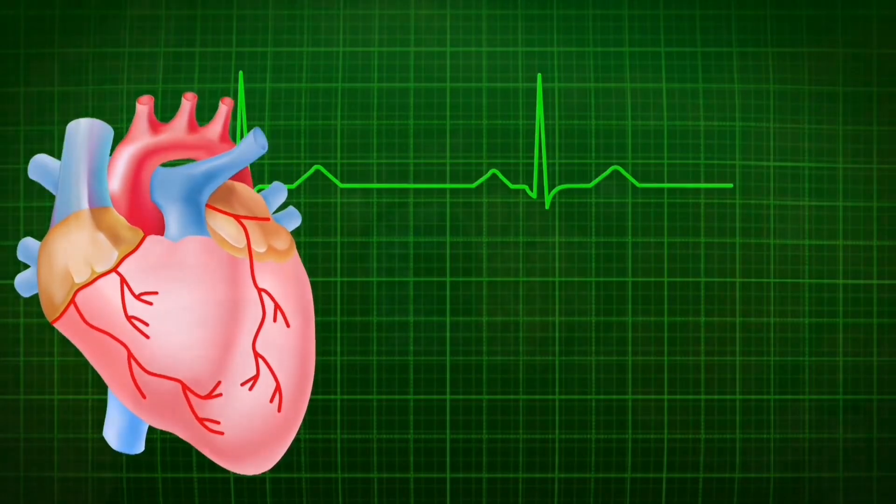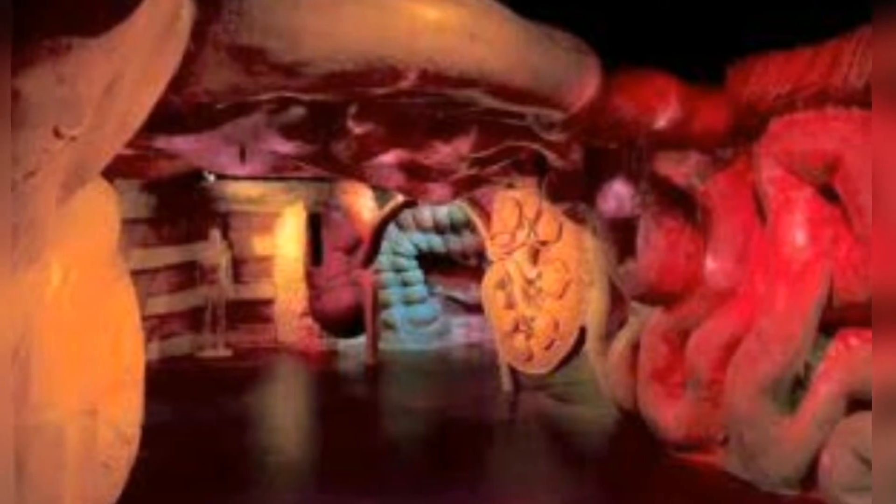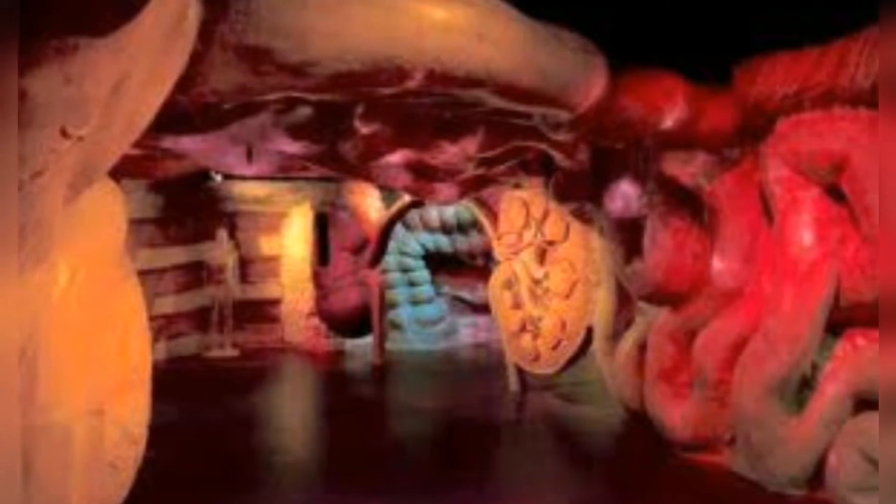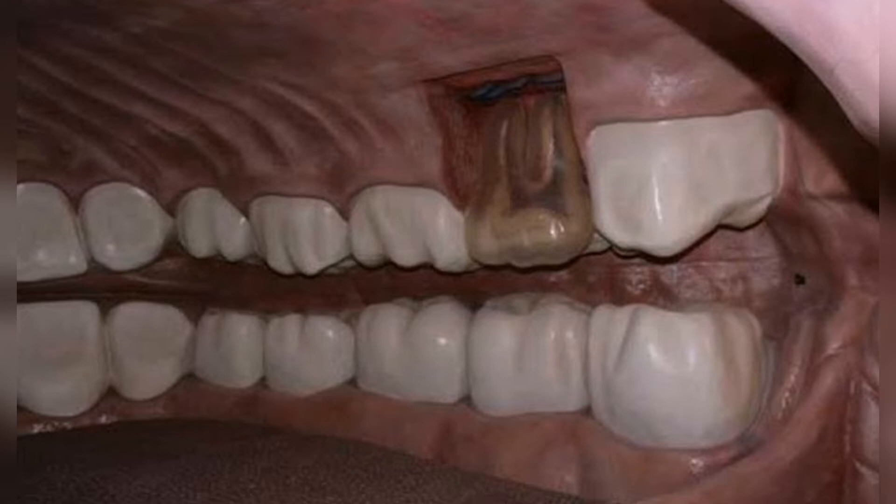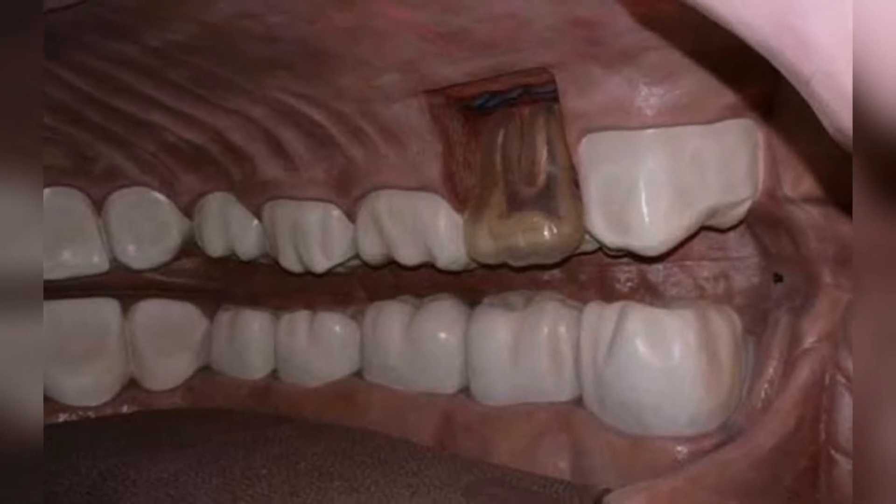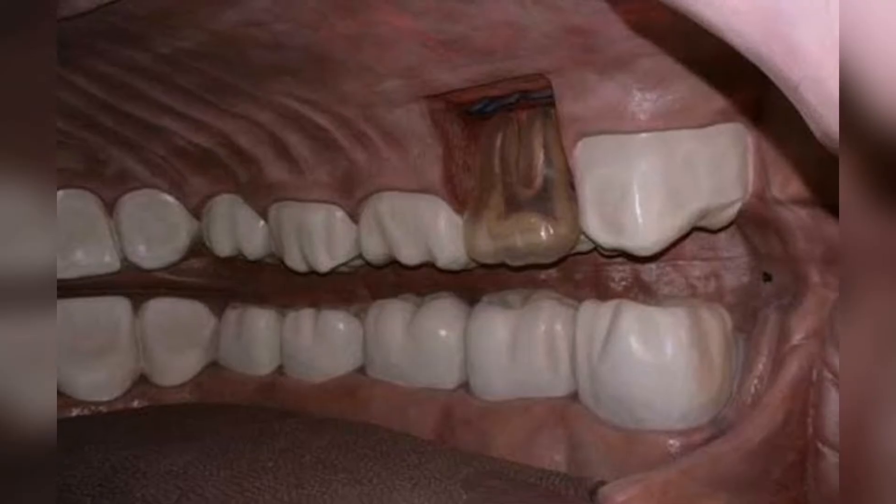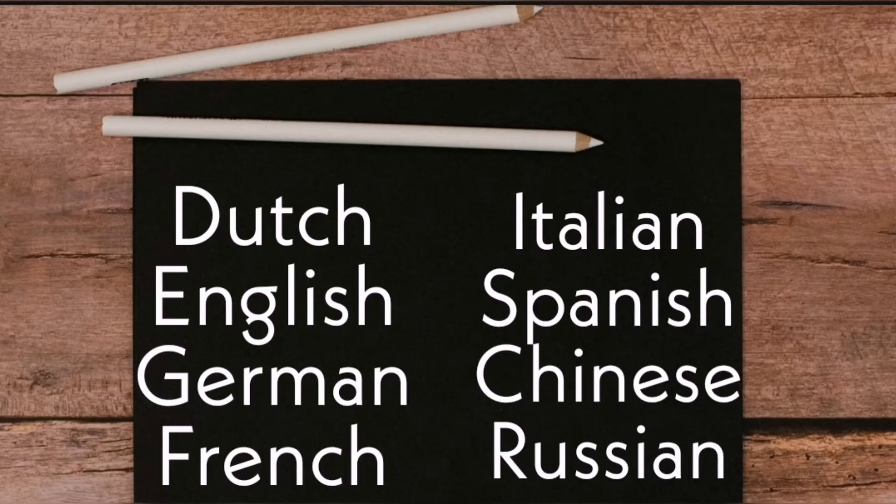The human body museum uses the latest exhibition technology, including audio and 3D visual display, and all its exhibits are made of fiberglass with more realistic colors. During the visit, the audience will pass through eight exhibition halls, the whole journey takes about almost an hour.